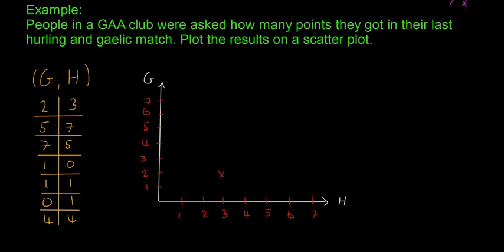So two, three, and you go to the next one then. Five in the Gaelic and seven on the hurling, so five up here in the Gaelic and across to seven on the hurling. Put another little X. This time it's seven on the Gaelic, five on the hurling, then one zero, one one, zero one, and then four four is the last one.